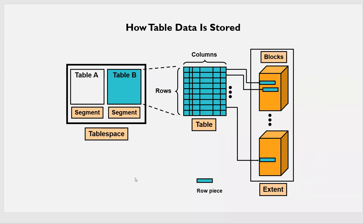That is how internally data is stored. Whatever data you write, assuming that is one extent and one extent has this many blocks, and table B has most of its data fitting into extent one. If I add one more row and there is no space in extent one to write it, one more extent is allocated, and whatever new records I add into table B will be written to that new extent. The combination of those extents together makes the segment for table B, and the combination of all segments within the tablespace makes the tablespace.